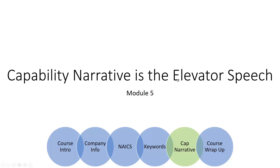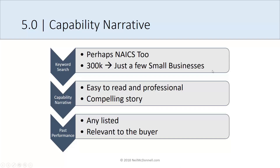They open up DSBS and search for a small business based on keywords, effectively reducing the pool of 300,000 small businesses down to 5 or 10, or maybe even 100. In this module, we're going to cover the capability narrative — a portion of your DSBS profile that buyers use to further reduce the pool of eligible small businesses. Buyers are not looking to choose from a large list; they just want a small list of qualified sellers.